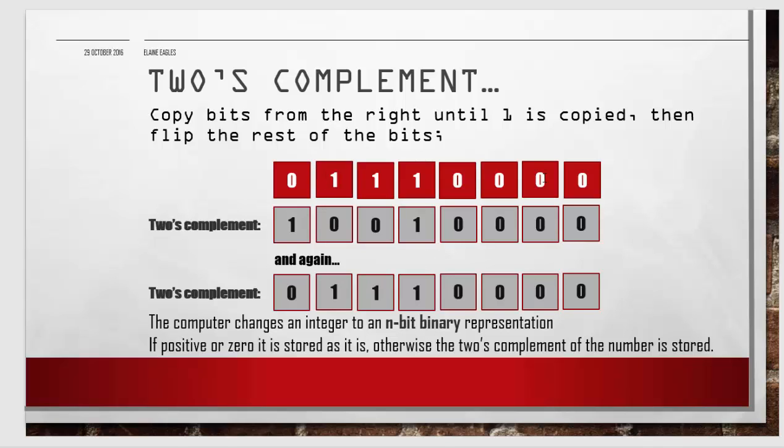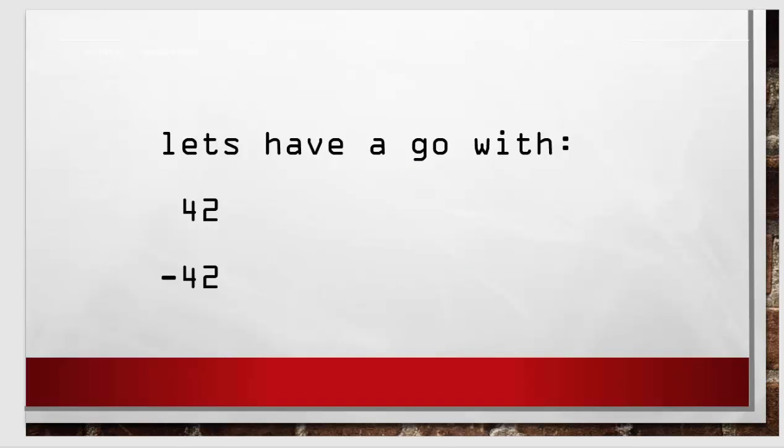When some data is received, the computer changes the integer to its n-bit binary representation. If it's positive or zero it's stored just as it is, otherwise the two's complement is stored. Let's have a go with the number 42 and minus 42.